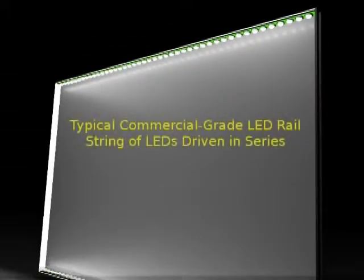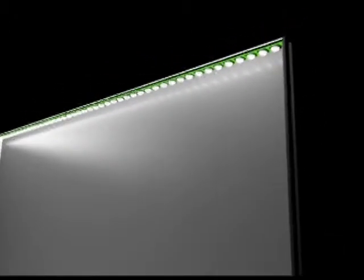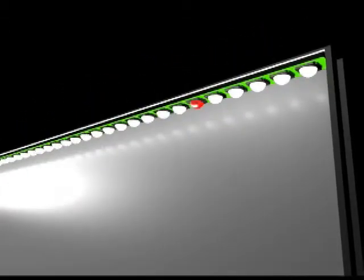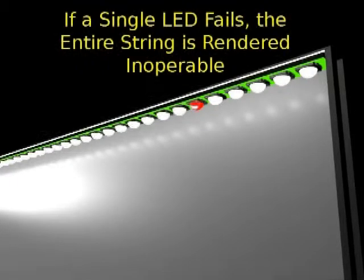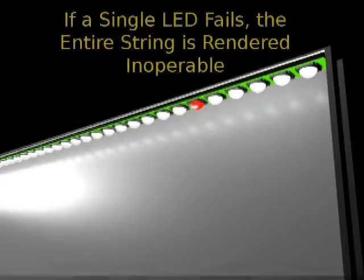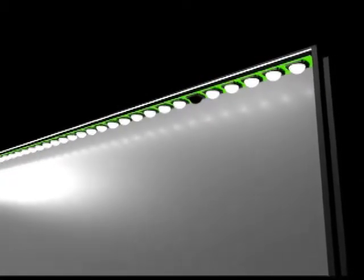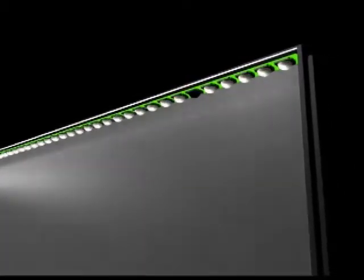Take this real-world graphic representation of what happens. There are 36 LEDs on the top rail of this LED backlight. As you can see, a single LED failure anywhere on the rail causes the entire rail to cut off, because it's driven in series.